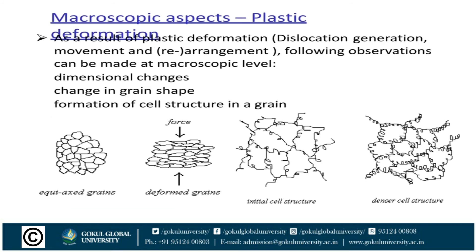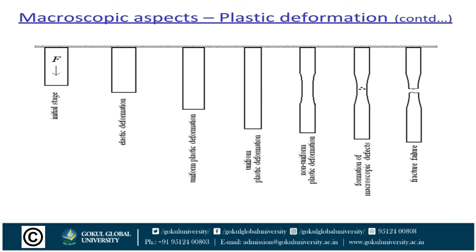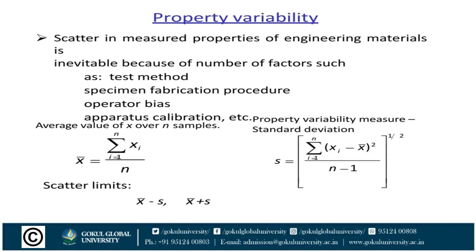The microscopic aspects of plastic deformation: when a force is applied, grains are deformed from their initial structure into a dendritic structure. When tensile stress is applied, first elastic deformation occurs, then uniform plastic deformation, then non-uniform plastic deformation is initiated, after which necking begins at the ultimate stage.